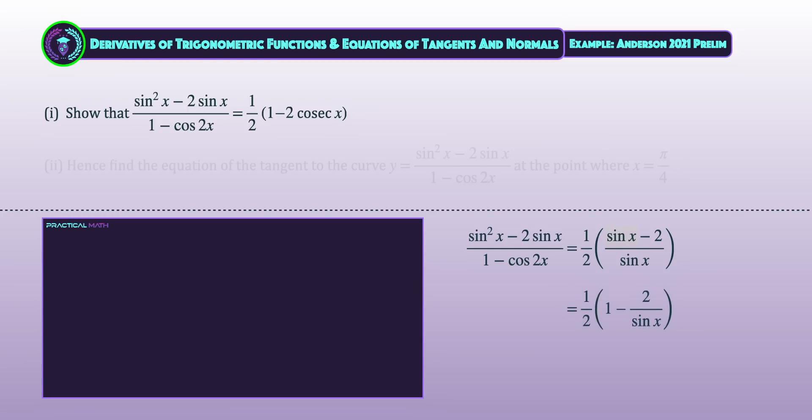Next, we will split the single fraction into two fractions by taking sinx/sinx in the first fraction. Then, we subtract 2/sinx as our second fraction. We will now convert 2/sinx into 2cosecx from the reciprocal trigonometric ratios, where cosecθ is the same as 1/sinθ.